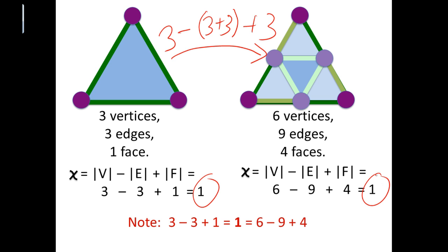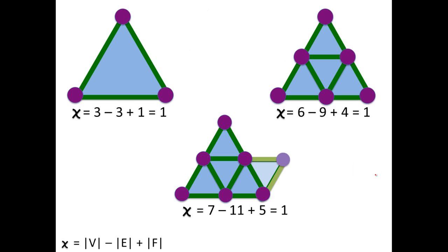Another operation that does not change the Euler characteristic is adding a triangle such that one of its edges agrees with one of the existing edges. What I've done is added one new vertex, two new edges, and one new face. One minus two plus one equals zero, so the Euler characteristic does not change when we add a triangle in this manner.